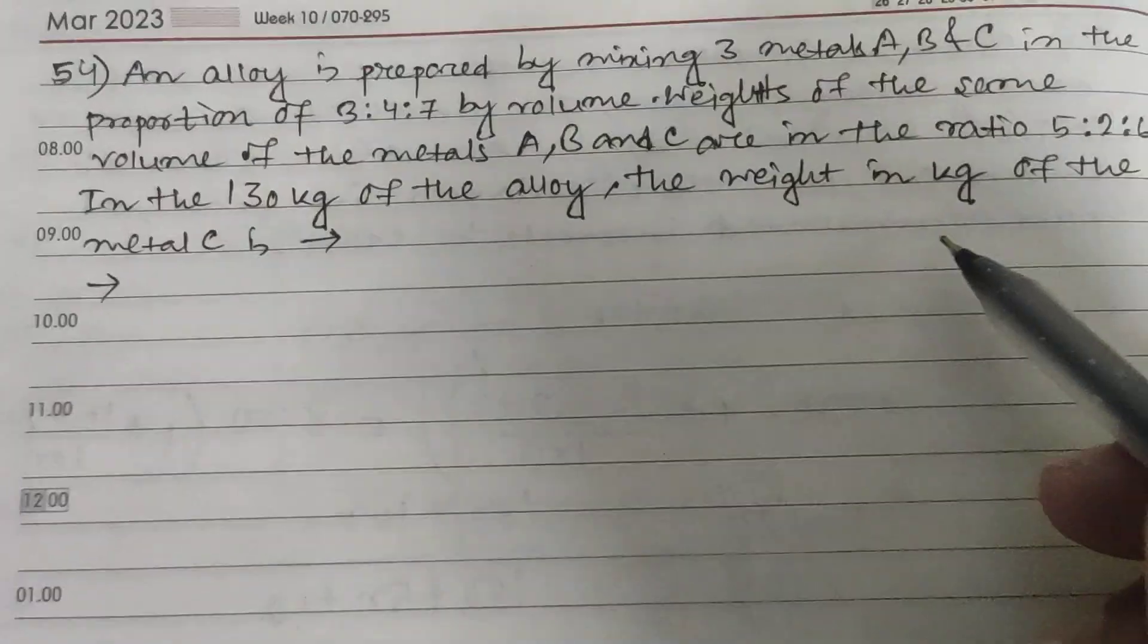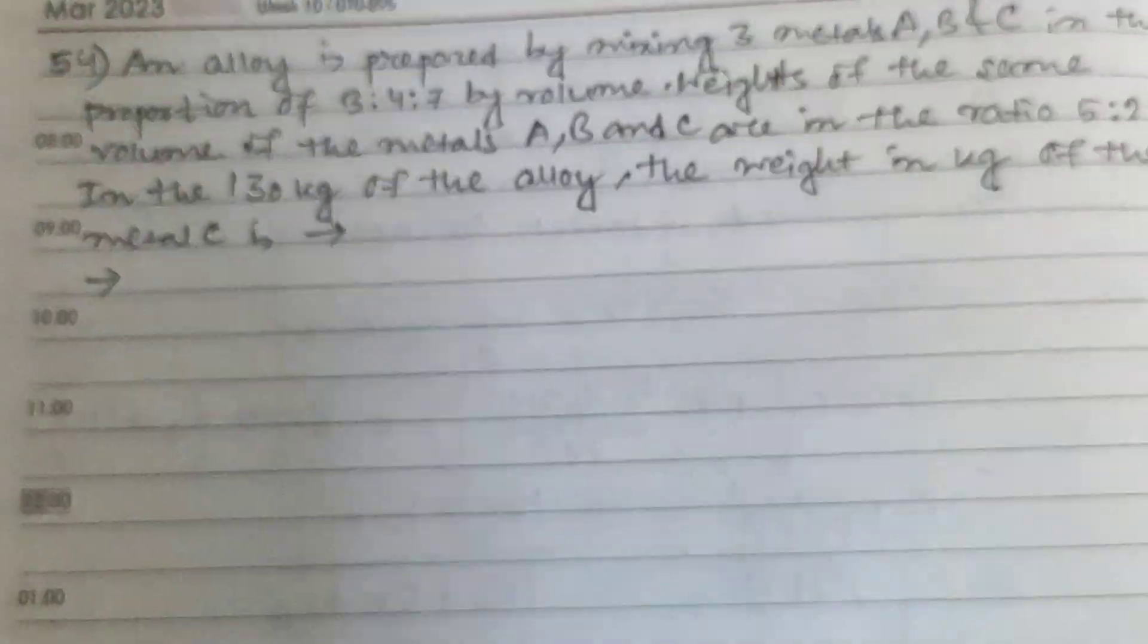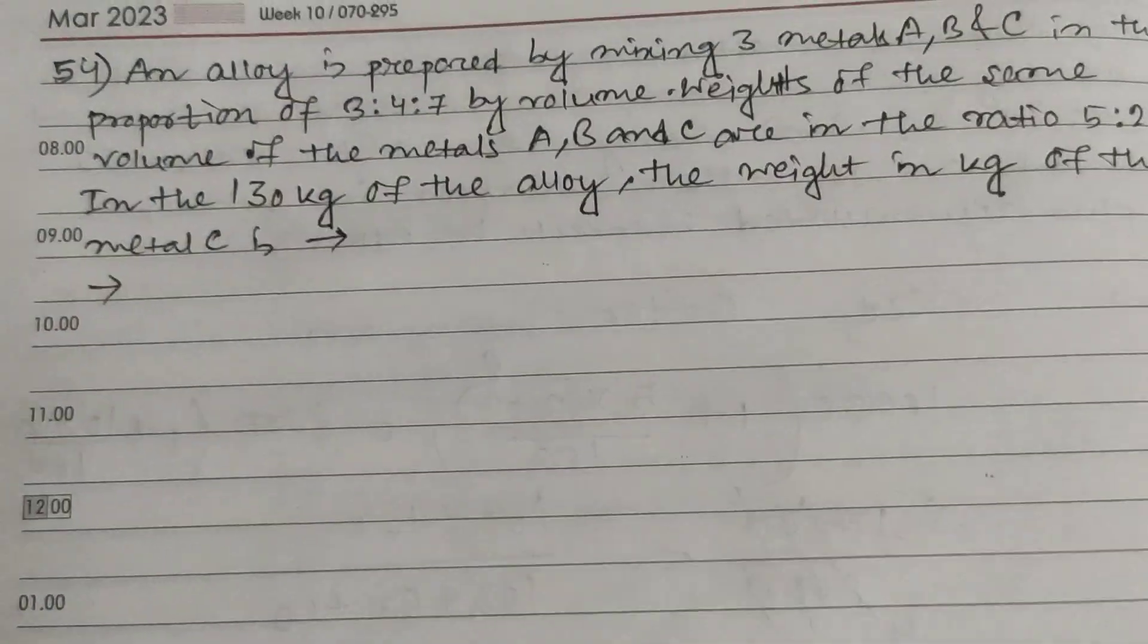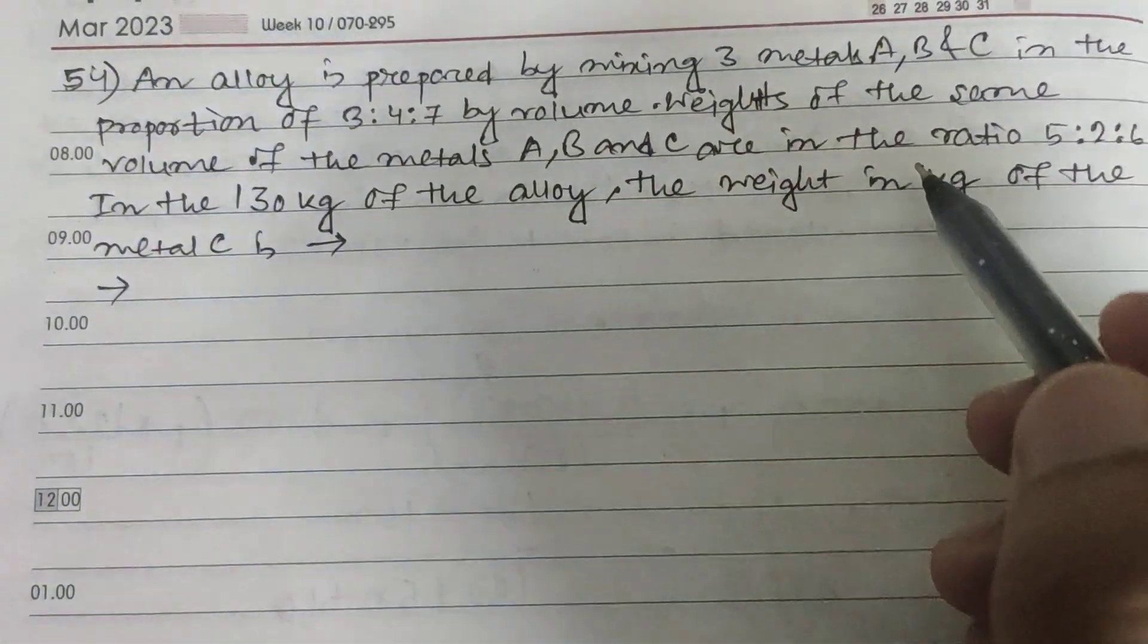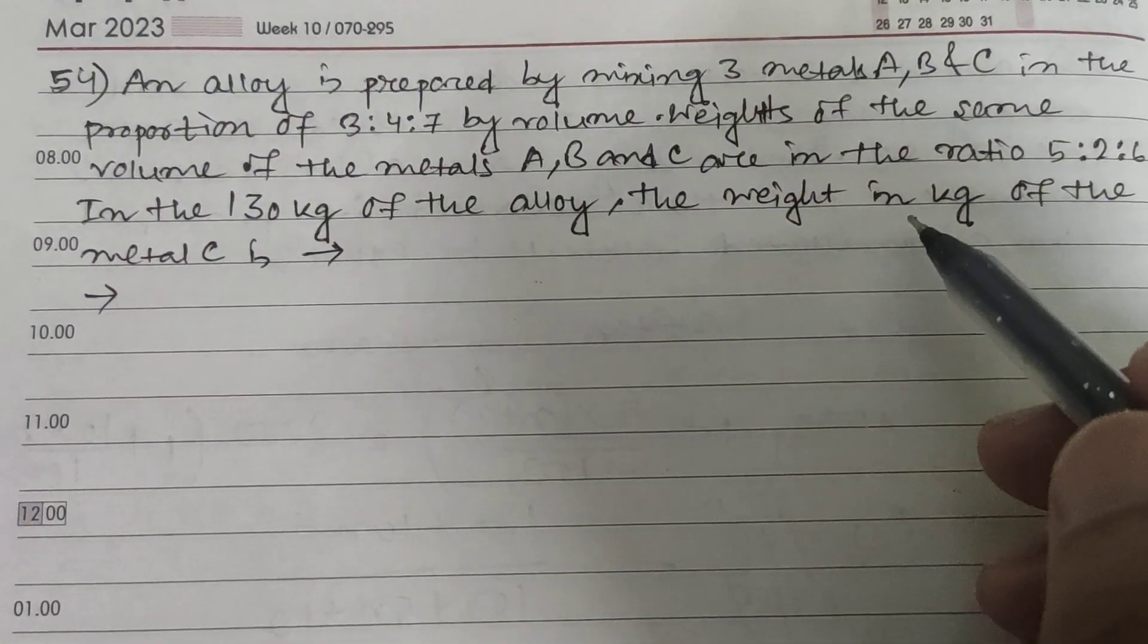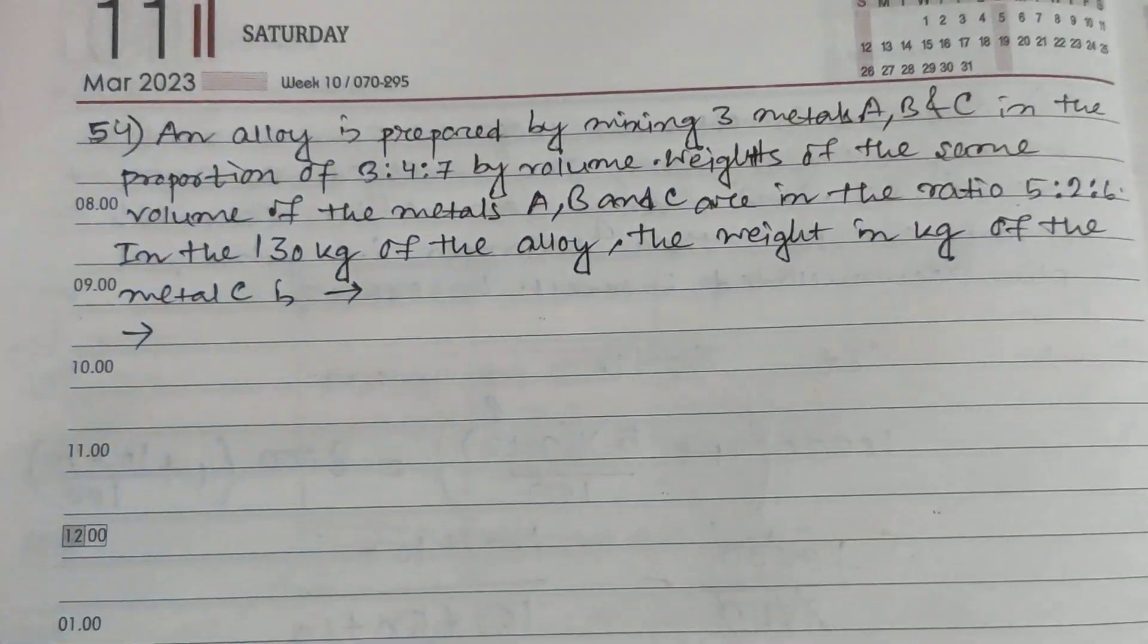So their proportion in volume is 3:4:7 and according to the weight 5:2:6.